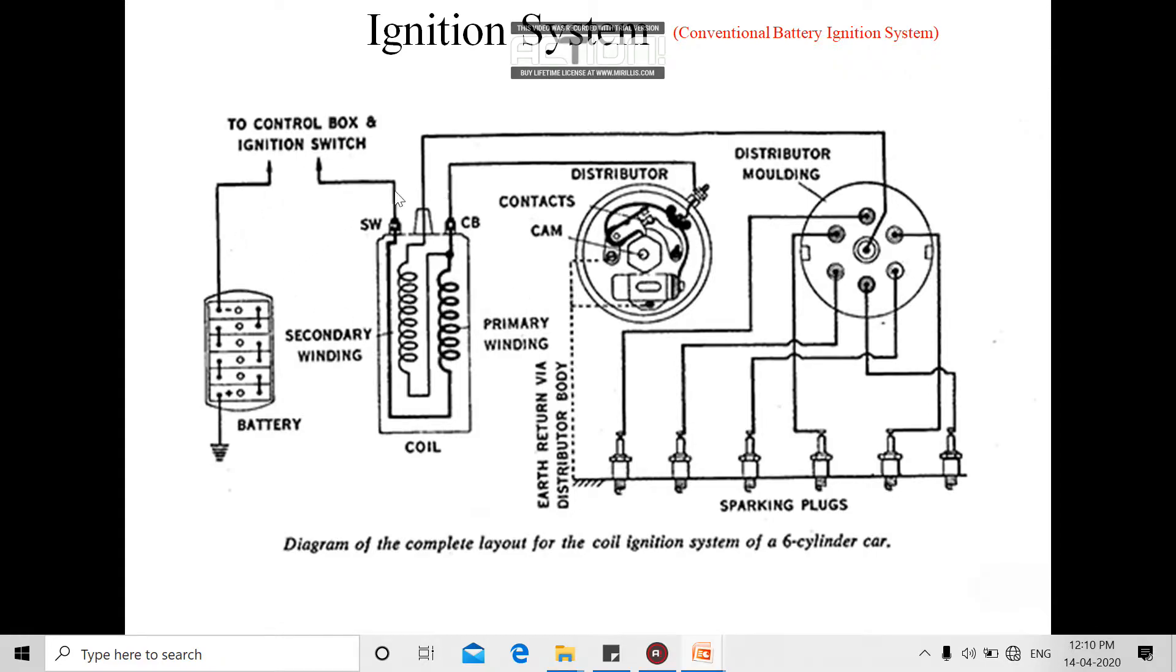This is the conventional battery ignition system schematic diagram. This diagram is supposed to be drawn in the exam. The previously explained diagram was three-dimensional, so it's not possible to draw in an exam. So let's see how this schematic is supposed to correlate with the 3D one.